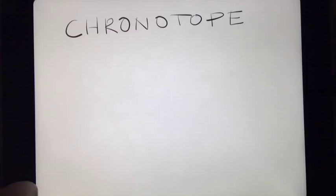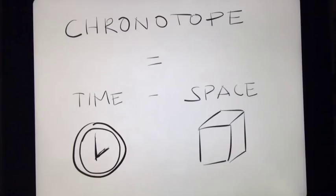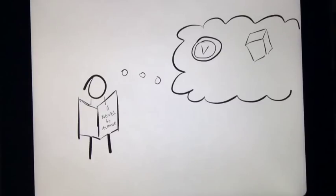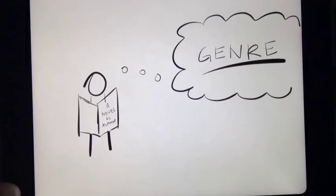Finally, we move on to chronotope, which literally means time-space. This refers to the way in which an author expresses time and space in a novel and makes them more visible, thereby also helping to define or reinforce common conceptions of a genre.